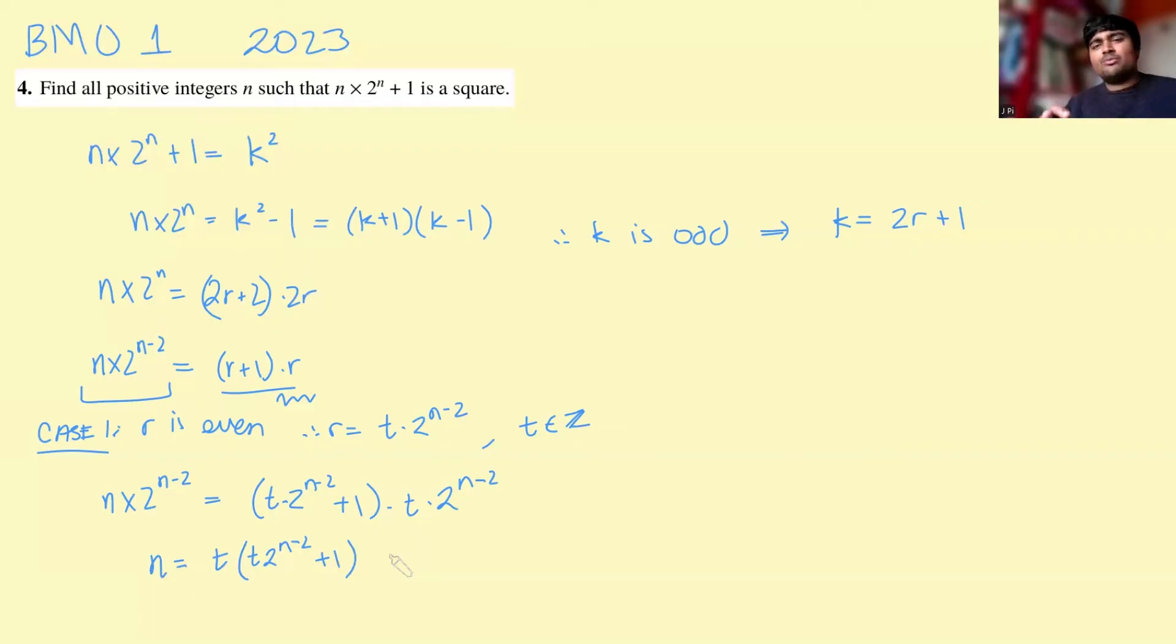So I've kind of gone through this a bit headfirst, it might seem, where I've just got letter after letter after letter. The question only had n in it. I introduced k, r, and now t into this problem. And I get this equation here, that n is t times t times 2 to the n minus 2 plus 1, which looks horrible. But we don't actually need that. We're just going to make an observation here.